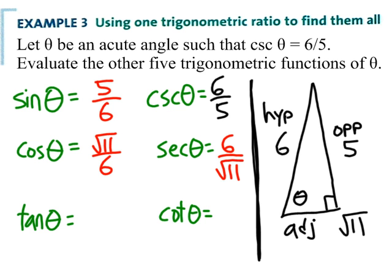but we're not going to worry about that. We'll just leave it as 6 over root 11. Tangent of theta is opposite over adjacent. That's 5 over root 11. And therefore, cotangent is root 11 over 5.